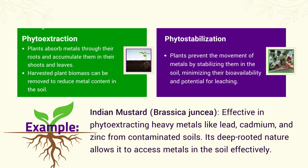Phytostabilization is a technique where plants play a critical role in preventing metal movement. They achieve this by stabilizing the metals within the soil, thereby reducing their bioavailability and the potential for leaching into the surrounding environment. For example, Indian mustard (Brassica juncea) is effective in phytoextracting heavy metals like lead, cadmium and zinc from contaminated soils. Its deep-rooted nature allows it to access metals in the soil effectively.